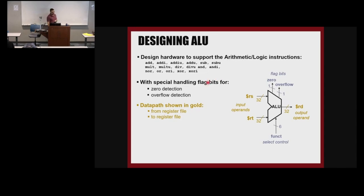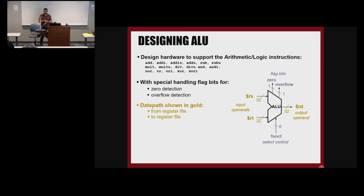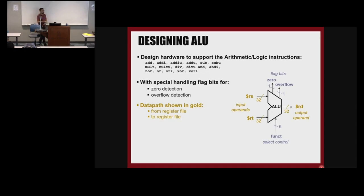The first and second sources go to the ALU. This is for R-type instructions. For I-type instructions, we have RS and then a number. In this module it's safe to assume we're talking about R-type instructions. We have two inputs, RT, and then an output register. When data starts from a register and is stored back to a register, that path is called the data path.